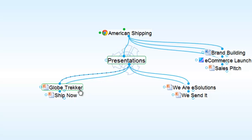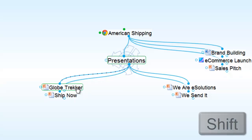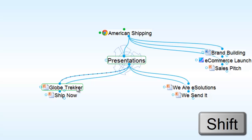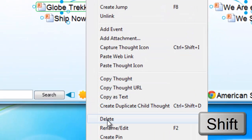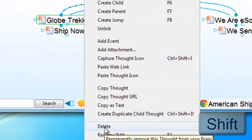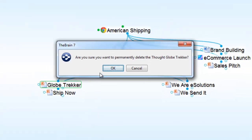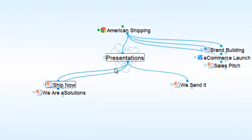Globetracker was also rejected. In this case, I'll click the Shift key as a shortcut so that when I right-click, I'll go directly to Delete, and permanently delete the Globetracker presentation from my brain.